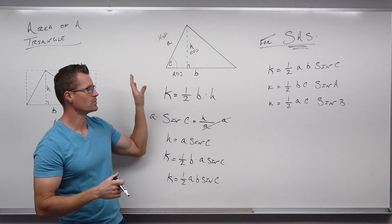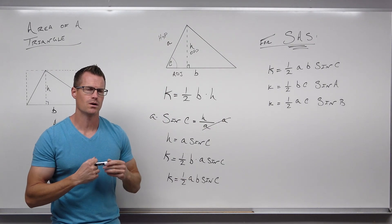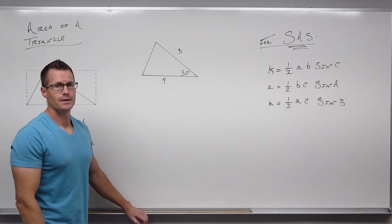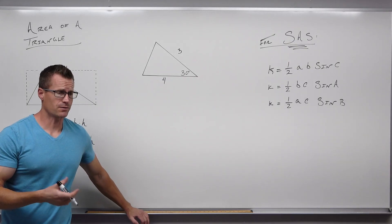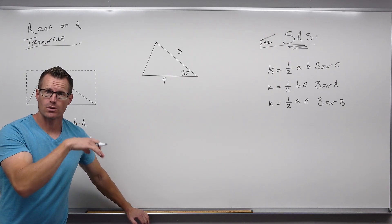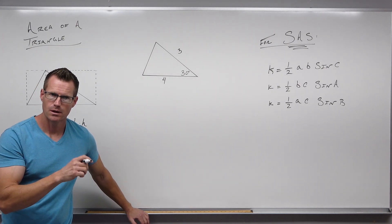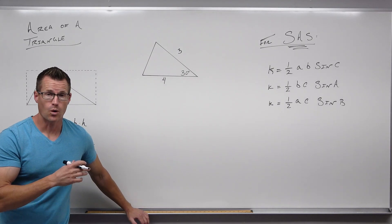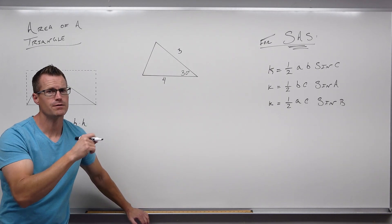Let's do two examples, then move on to knowing all three sides. We have a triangle — it doesn't matter if it's a right triangle. All we need is two sides and an angle between them. To find the area, take one half times the two sides times sine of the angle between them. You can label the sides and angle as A, B, and C if you need the formula, but the concept is the same no matter the orientation.